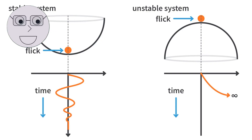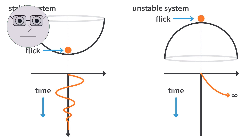Stability is another critical concept in control theory. A system is said to be stable if it returns to its original state after a disturbance. In other words, a stable system will not continue to oscillate or diverge after a disturbance.